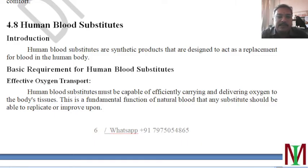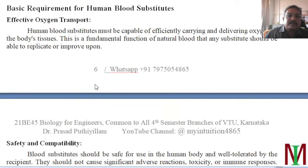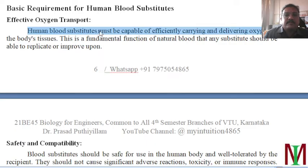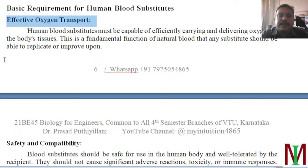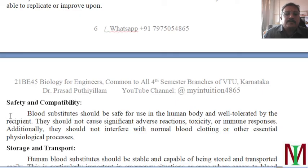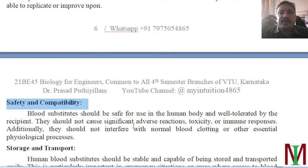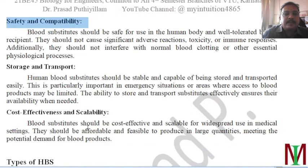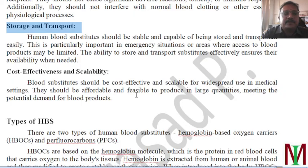The last topic of this module is human blood substitutes — a substitute for blood, not a complete replacement. The basic requirements for such a substitute are: effective oxygen transport (since blood is a very good transporter of oxygen), safety and biocompatibility (it must not cause harm to the body or irritate the body's system, otherwise the immune system will destroy it), and suitable storage and transport properties.